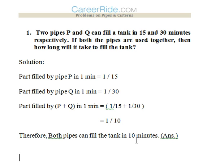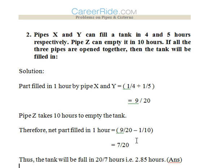Second question: pipes X and Y can fill a tank in 4 and 5 hours respectively. Pipe Z can empty it in 10 hours. If all three pipes are open together, then when will the tank be filled? What we would apply here is we'll try and add the work of pipe X and Y and subtract the work of pipe Z.